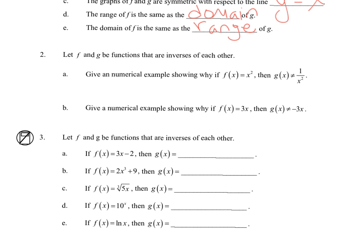Give a numerical example showing why if f(x) = x squared, then the inverse is not 1 over x squared. Let's choose x equals 4. That means f(4) is 16, so when I plug 16 into g, if they're inverses, I should get 4. But 1 over 16 squared is 1 over 256, which is not 4.